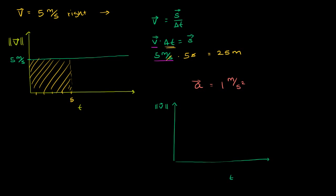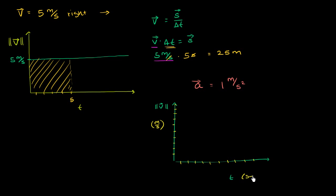And this right over here is my time axis. Let me mark off the axes — 1 through 10 on both axes. The magnitude of velocity is measured in meters per second, and time is measured in seconds.